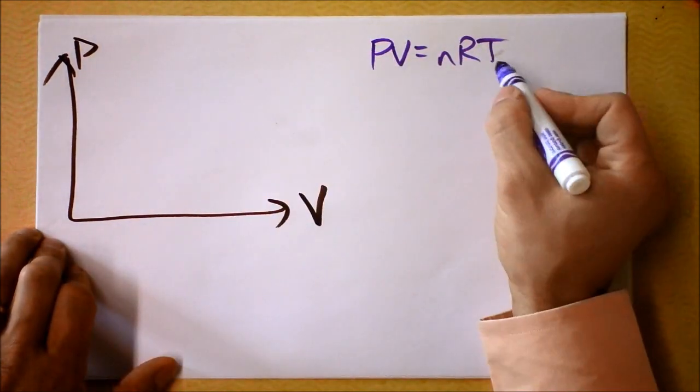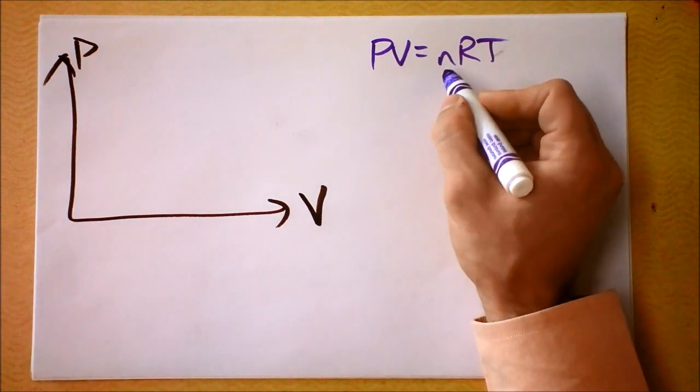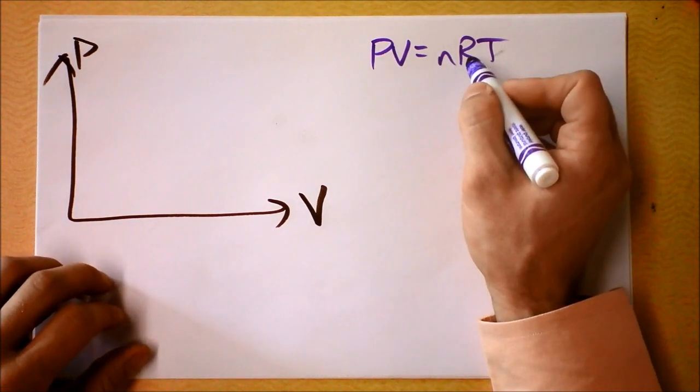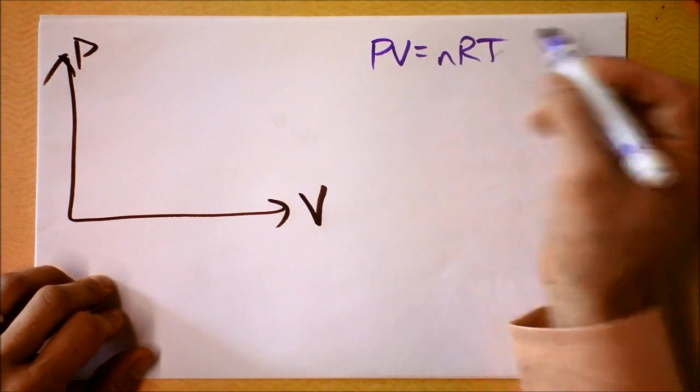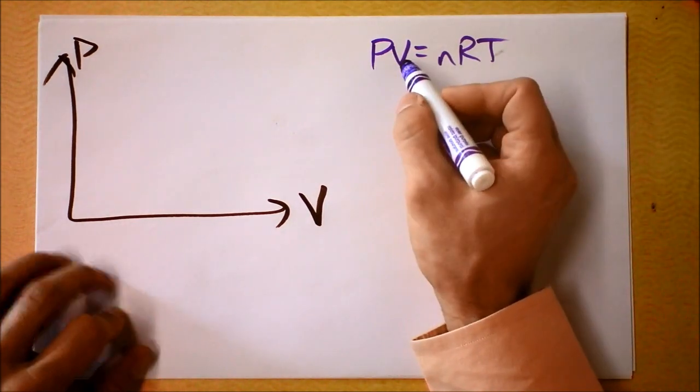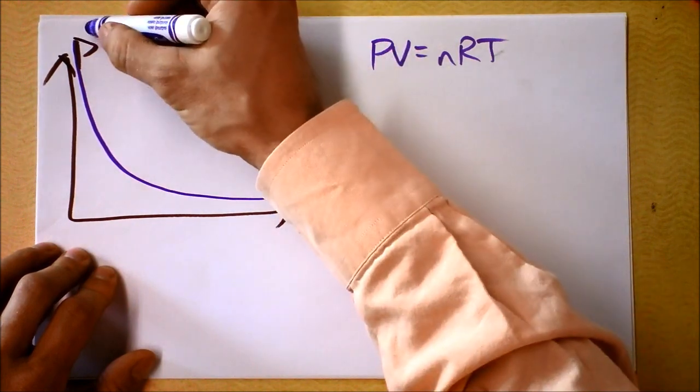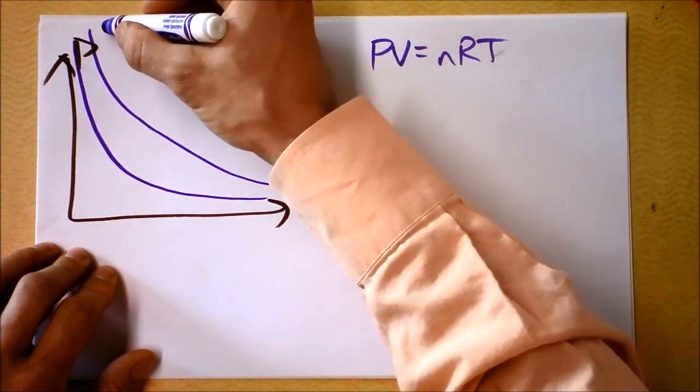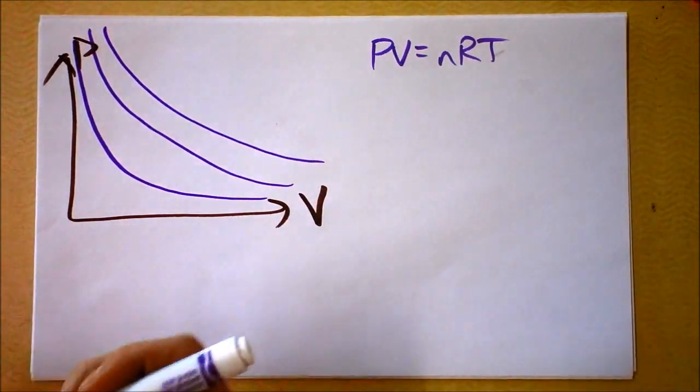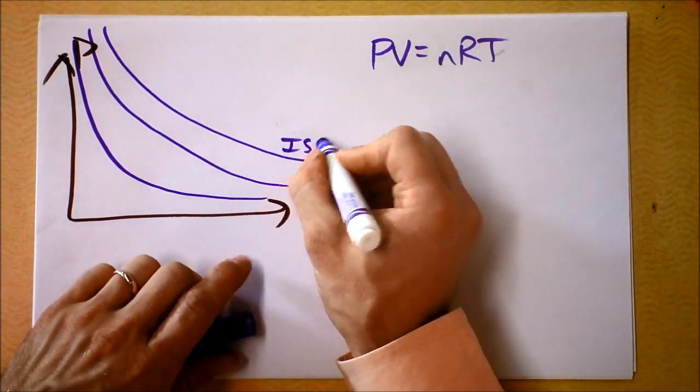You know that PV is NRT, and so if the temperature is the same and the number of molecules or particles is the same, and this is a law, this is a constant here, this R, then PV is going to be the same. So you're going to have these isotherms that look like inverses. Let me label these guys as isotherms.